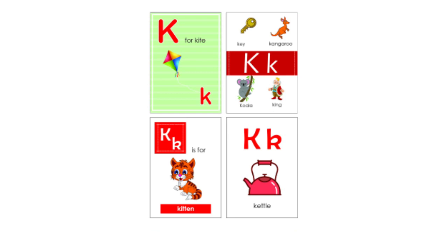Now let's take a look at the letter K, and let's name these words together: kite, kangaroo, koala, king, kettle, and kitten. Can you name other things that begin with K? Go ahead.